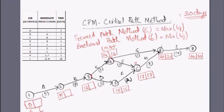At node 3, there are also two backward arrows. One gives 16 minus 2 equals 14; the other gives 15 minus 3 equals 12. Since 12 is the minimum, the latest occurrence at node 3 is 12. Continuing backward, there is just one arrow to node 2: 12 minus 7 equals 5. Finally, at node 1: 5 minus 5 equals 0.